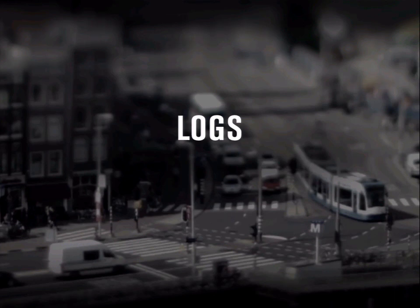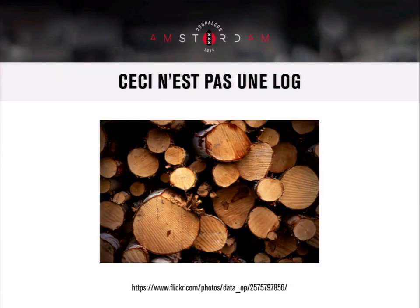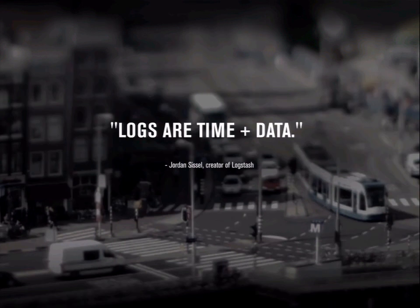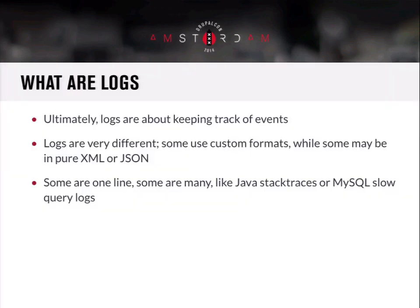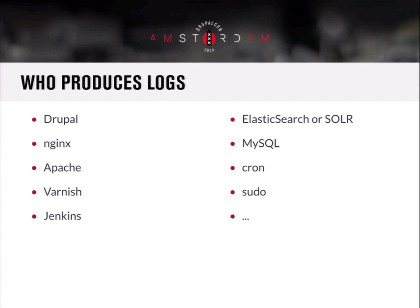Let's jump back to talking about logs in general. Many different people have different definitions of logs, but generally logs are just time and data — at a particular timestamp, this thing happened. Their formats can be quite different. A lot of newer applications can log to formats like XML and JSON, which can be read without any intermediary parser. Some logs are one line — Apache access logs for instance — but many, like MySQL slow query logs or Java stack traces, could be multiple lines long.